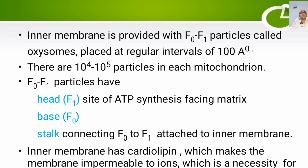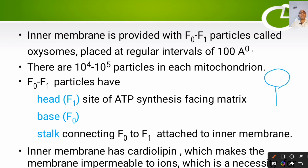F0F1 particles consist of three important parts: a head part, a stalk, and a base part. The head part is called the F1 part and the base part is called the F0 part. The head part or F1 part lies towards the matrix side, remaining immersed in the matrix, whereas the base part remains attached to the inner membrane.